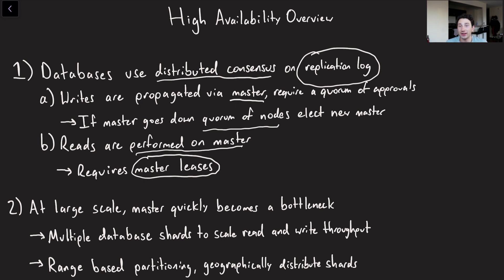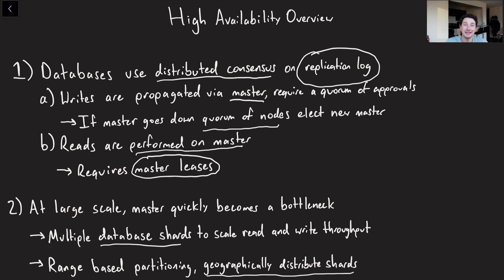Partitions and shards are not necessarily the same thing — you can have many partitions on a shard. In Google's case, they use many database shards, assign range-based partitions to those shards, and geographically distribute them so users in Asia hit certain shards and users in America hit others, keeping latencies down. They do range-based partitioning, at least per my read of the paper. By contrast, something like Dynamo uses hash range-based partitioning to avoid hotspots.